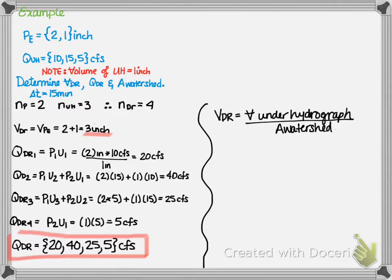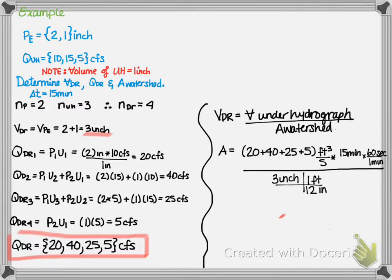Now, let's calculate the watershed area. The volume of the direct runoff is equal to the volume under the hydrograph divided by the watershed area. The area, therefore, is equal to 20 plus 40 plus 25 plus 5 cubic feet per second times my time step of 15 minutes times 60 seconds per minute. This would give me cubic feet. I divide it by my 3 inches, which is the volume of my direct runoff, and I convert inches to feet. And I get an area of 3,324,000 cubic feet, or 7.4 acres.